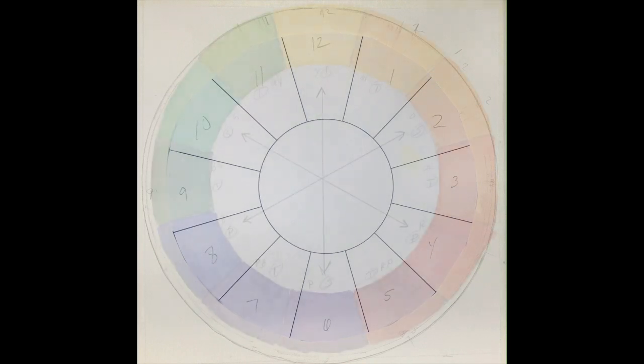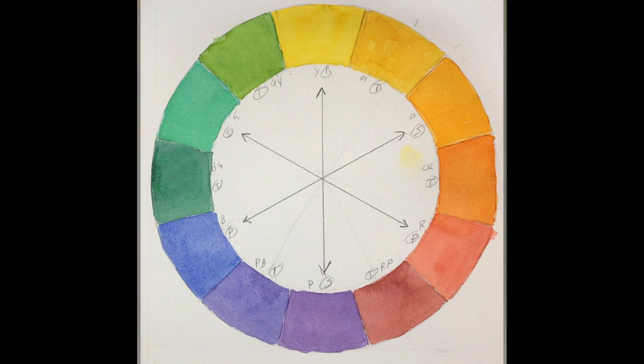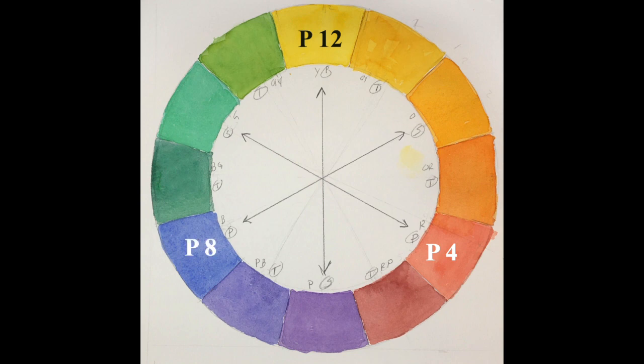You can draw it as large as will fit on your page. Put your primary colors in first: yellow at 12, red at 4, and blue at 8. Your secondary colors, orange, purple, and green are at 2, 6, and 10.